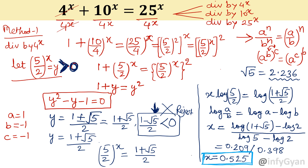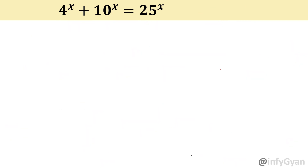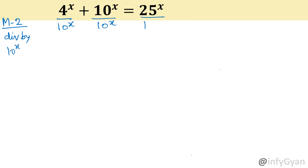Now come to the next method — Method 2 — that is dividing by 10 raised to the power x. The bases are different: numbers are 4, 10, and 25 — so we are dividing by the smallest, middle, and biggest. Let us divide by 10 raised to the power x.